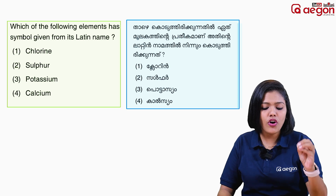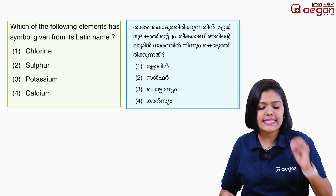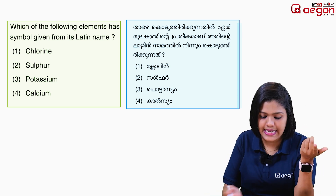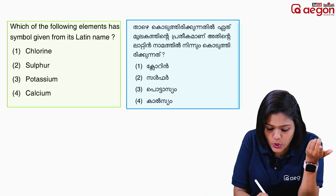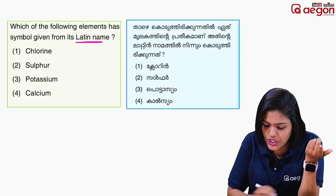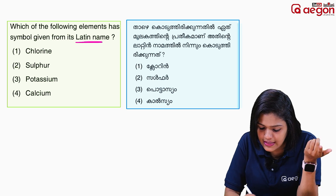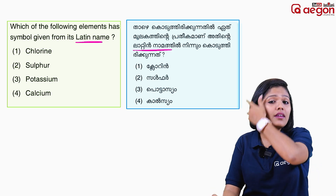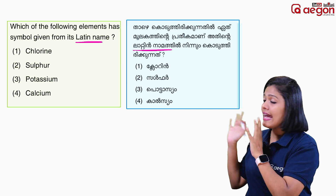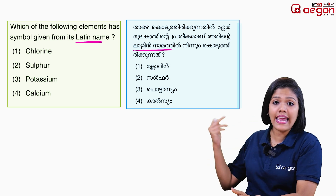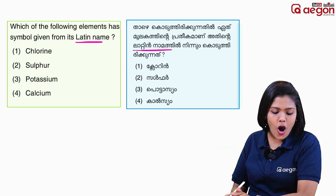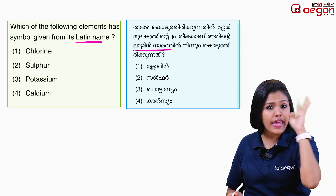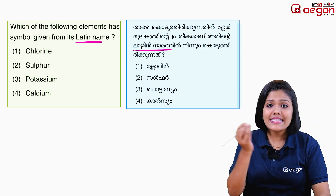Next question: which of the following elements has a symbol derived from its Latin name? The options are: chlorine, sulfur, potassium, calcium.